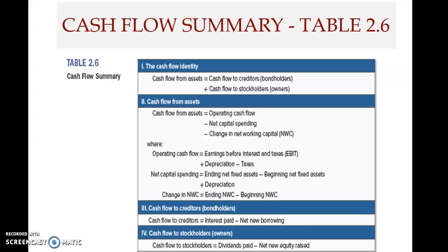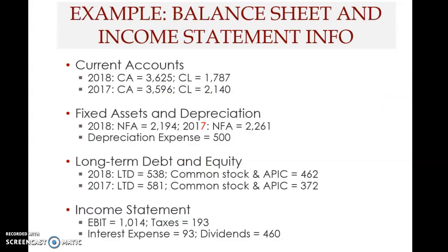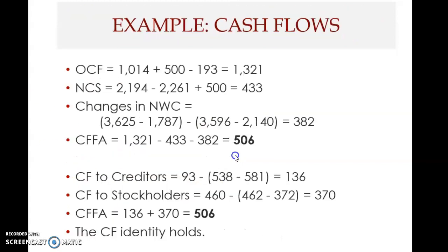Here is a summary you can review on your own time. There is another example for preparing the cash flow statement given balance sheet and income statement information — also to do on your own. The solution shows cash flow from assets of $506 and cash flow to capital providers of $506. The cash flow identity holds: CFFA equals CFTCP, since the cash flow identity is derived from the balance sheet identity.